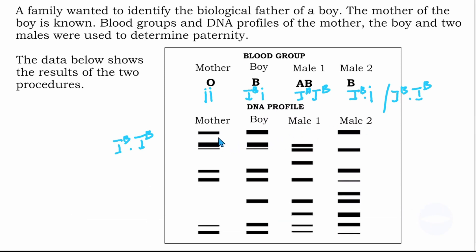When you get a ruler, you will compare the bands — the mother's band, the boy's bands, and the bands for male 1 and male 2. To get the result, we must compare and match these bands. If they match, then there is a high possibility of being the biological parent. Let me show you how we compare the bands.